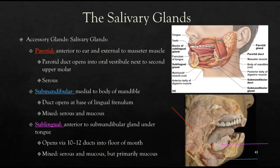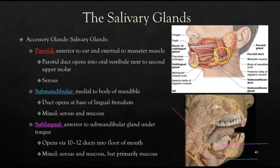One of the accessory glands within the oral cavity are the salivary glands. We have three pairs, the largest being the parotid gland. The parotid gland can be found anterior to the ear and external to the masseter muscle that attaches to the mandible. It has a special parotid duct that opens into the oral vestibule next to the second upper molar, and the fluid it secretes is mostly serous.